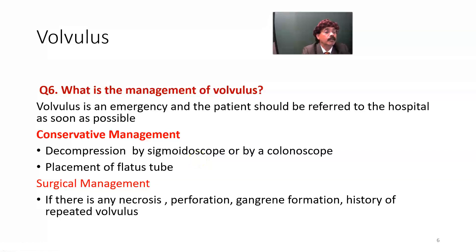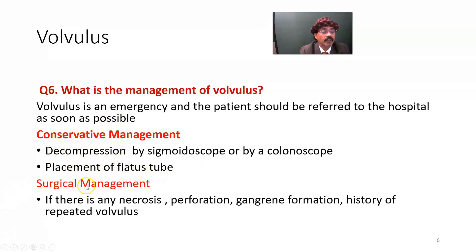Colonoscope may be useful for cecal volvulus. Placement of a nasogastric tube is also part of conservative management. Surgical management is indicated if there is any necrosis, perforation, gangrene, or a history of repeated volvulus. The surgeon will resect that part of the bowel and reconnect the remaining ends.